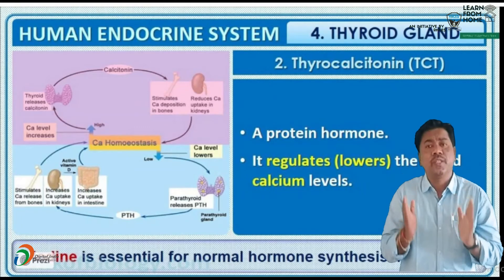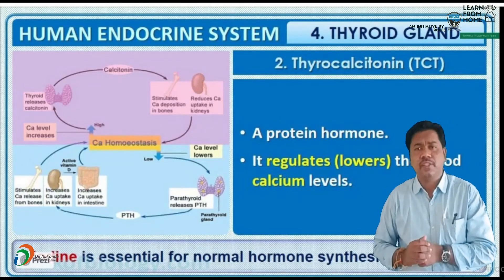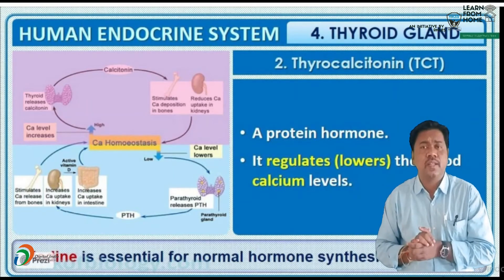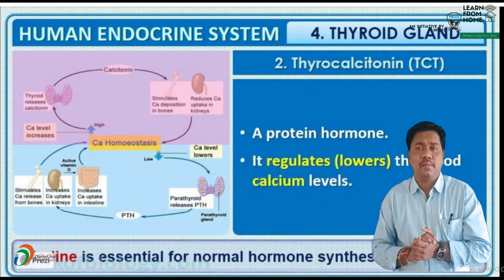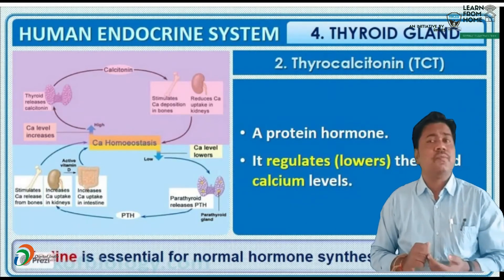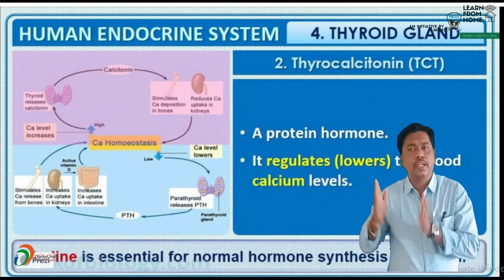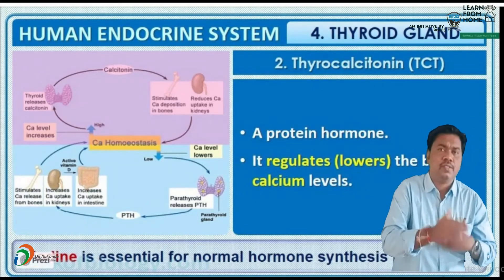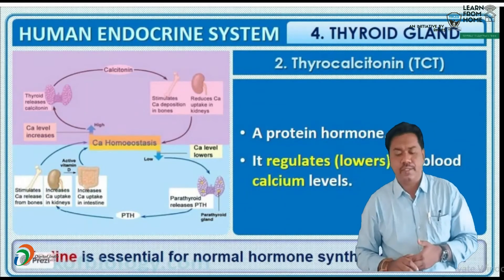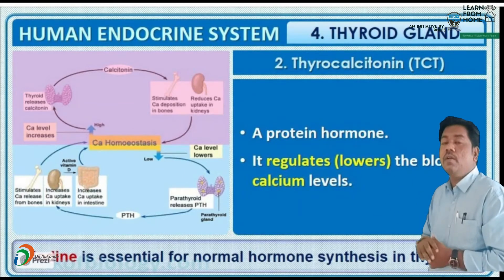Low concentration of calcium in the blood leads to tetany disease, characterized by wild contractions of skeletal muscles. This was a question in the AIIMS examination. Due to the deficiency of thyrocalcitonin hormone, tetany disease also occurs. Hypothyroidism means enlargement of thyroid gland due to deficiency of iodine, also known as simple goiter disease. In adult women, it causes irregular menstrual cycles.